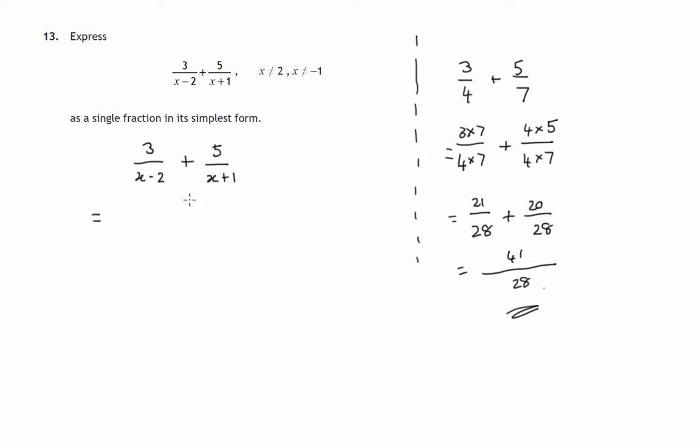What we can do is multiply the bottom and top of this fraction by x+1, so both top and bottom get multiplied by x+1. If we take the right-hand fraction and multiply top and bottom by x-2,